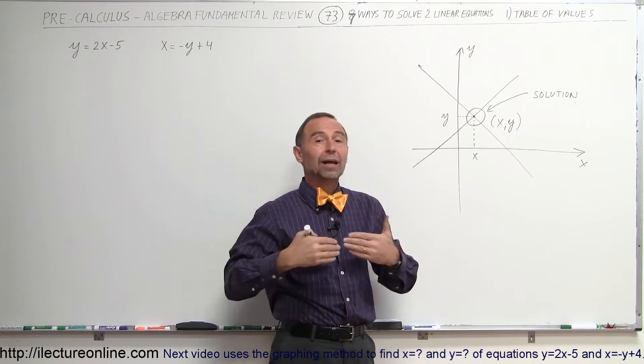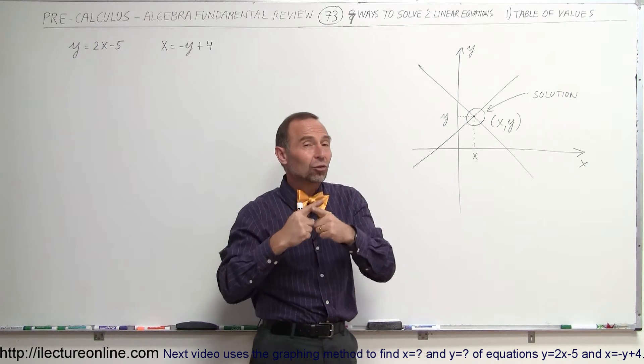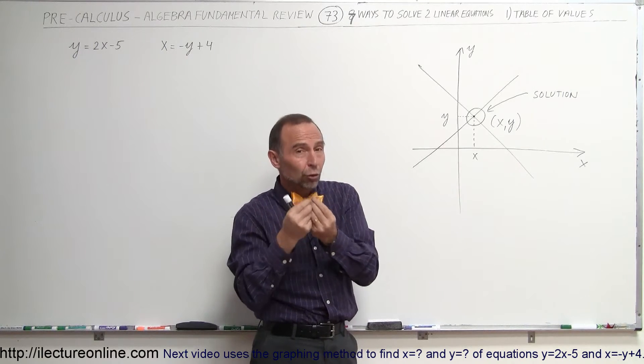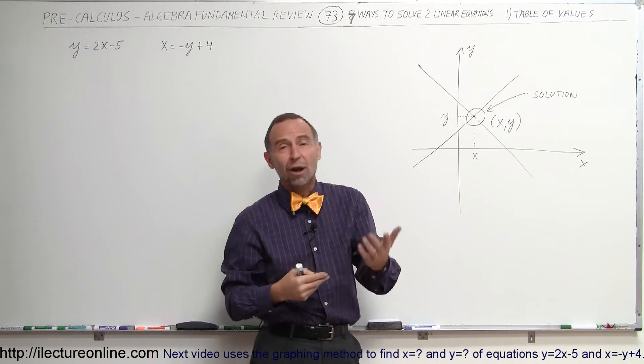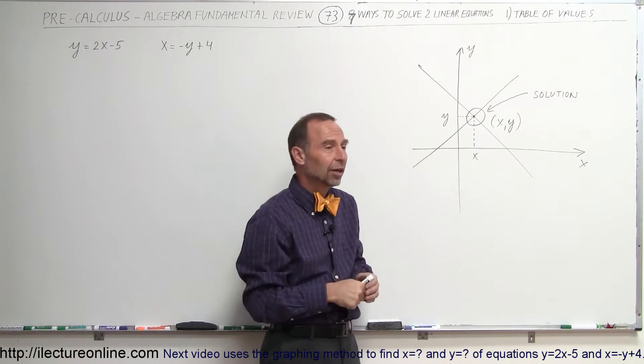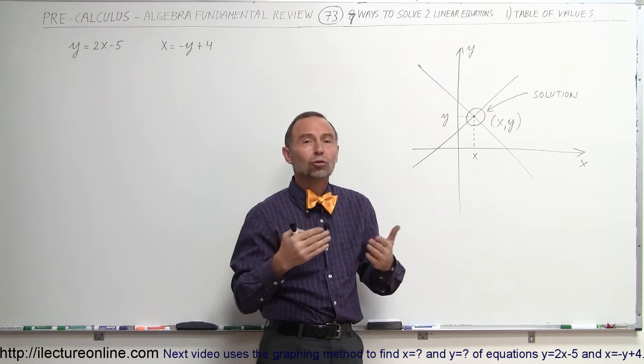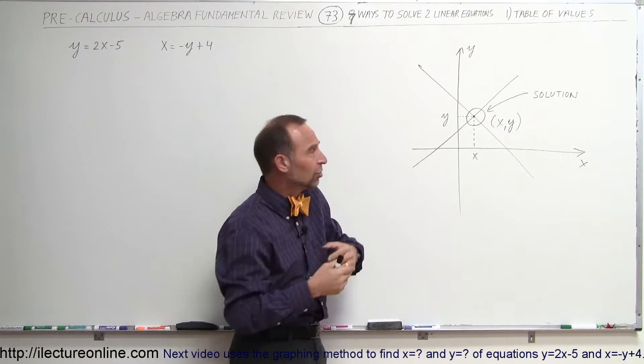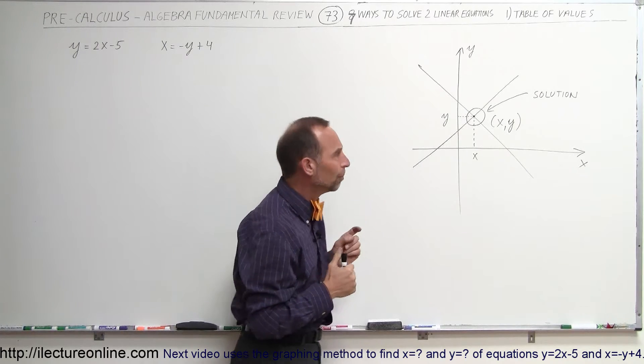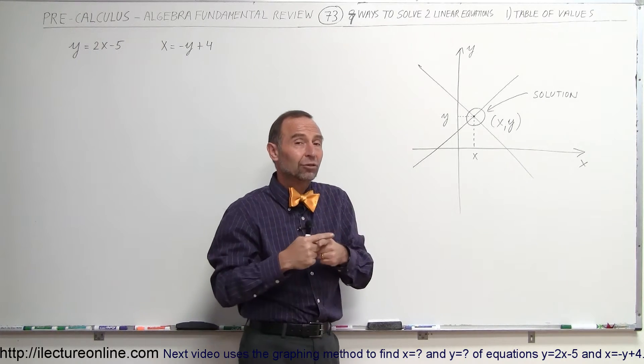We can represent all kinds of things by linear equations, and where those two equations cross, they usually represent some sort of solution. In business, it could be the profit or the cost of a business, it could be the scientific solution to an equation, a chemical equation, all kinds of things. So, how do we find the place where the two lines cross?